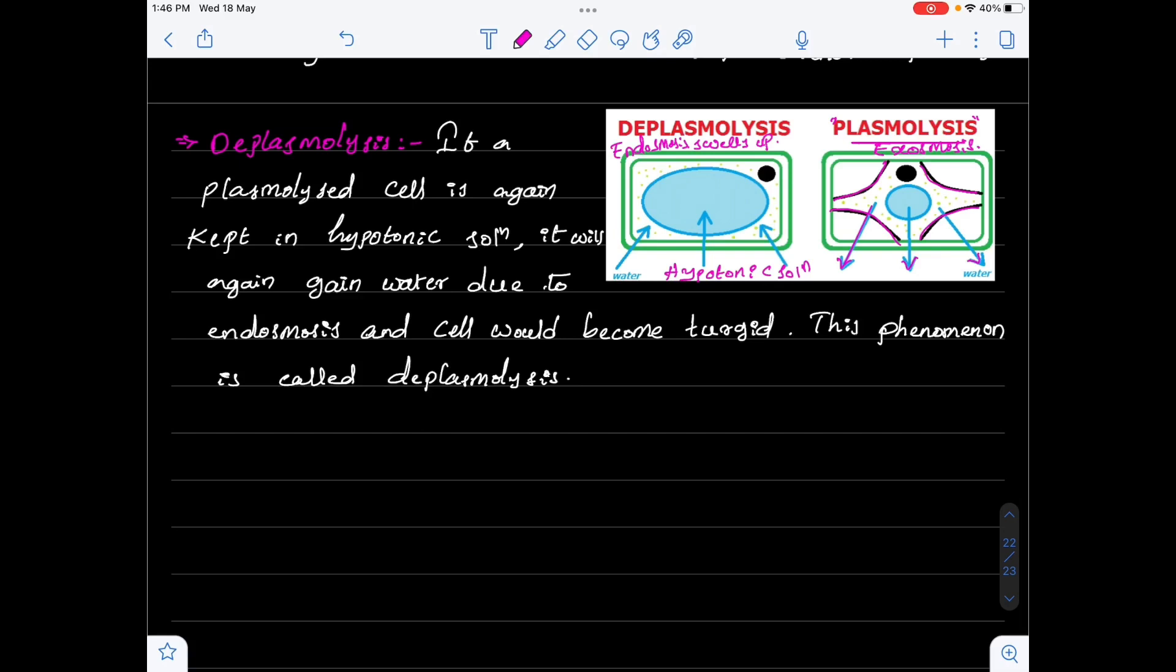Now, let me write here, when RBCs are placed in hypotonic solution, what happens? RBCs burst after some time, and we call this process as Hemolysis.